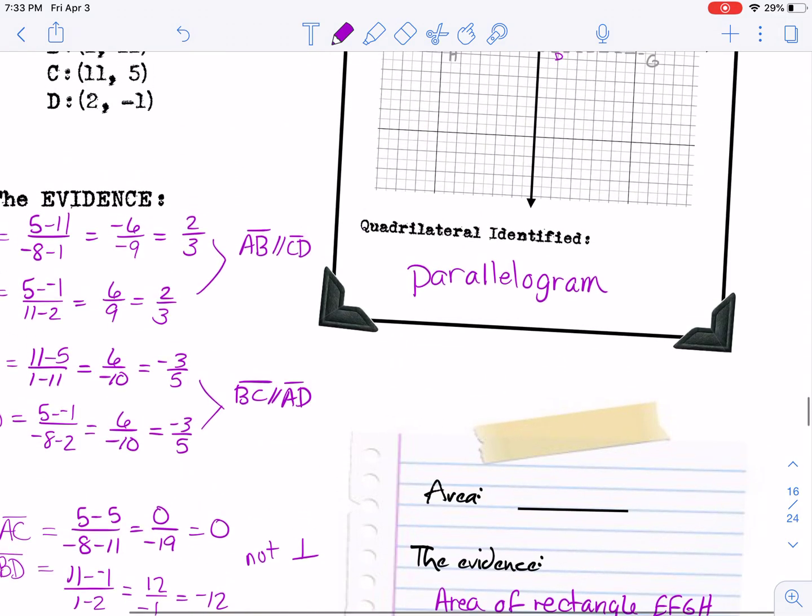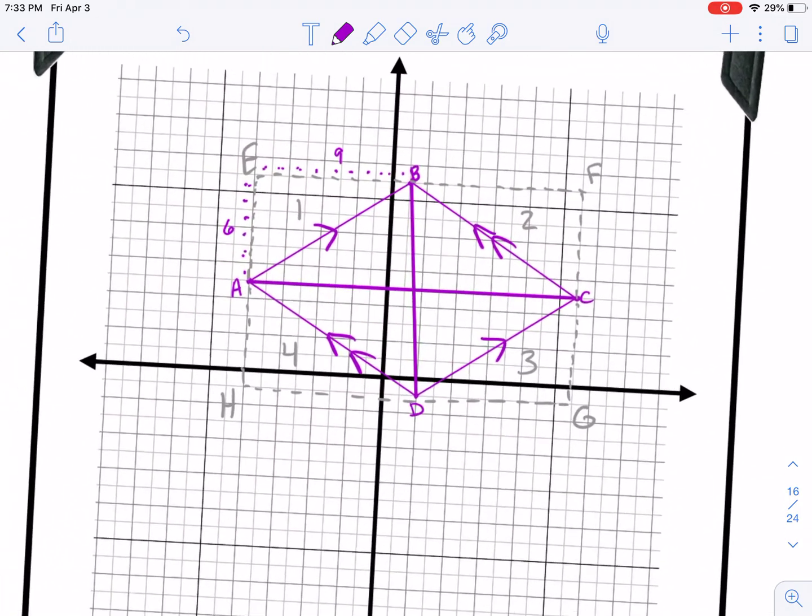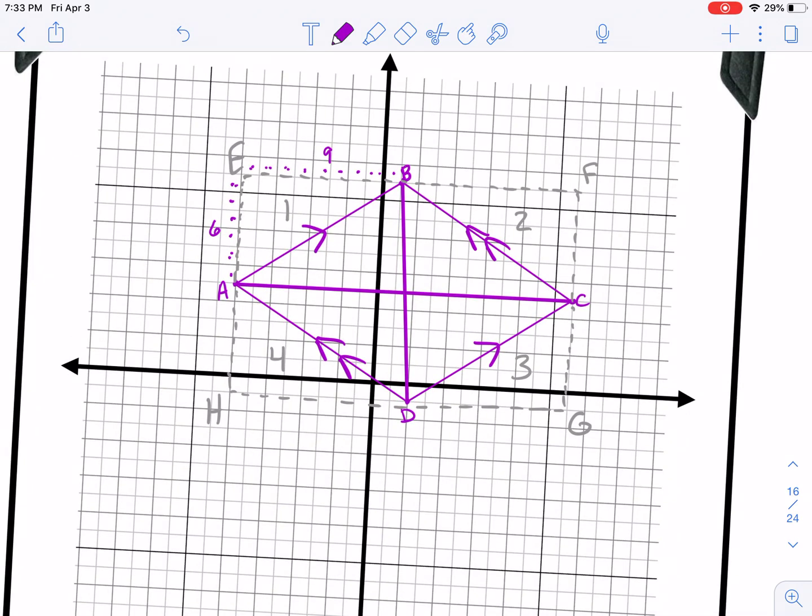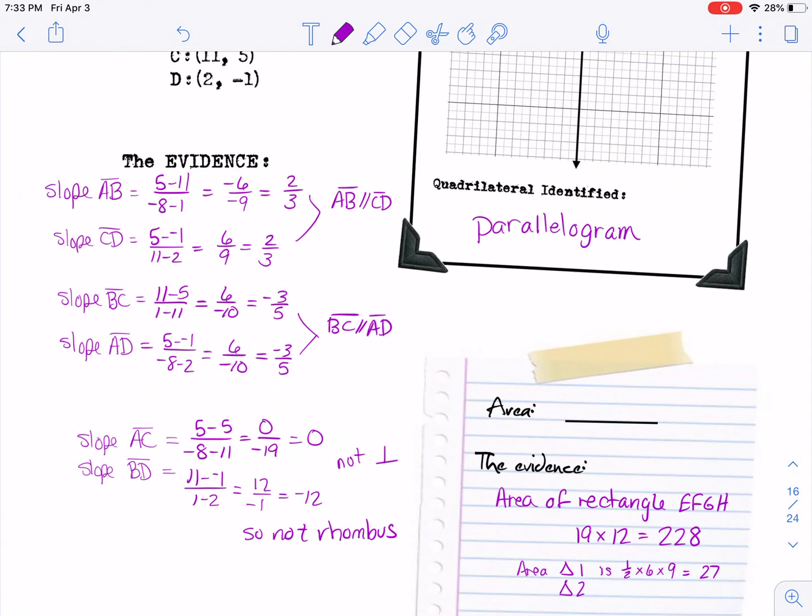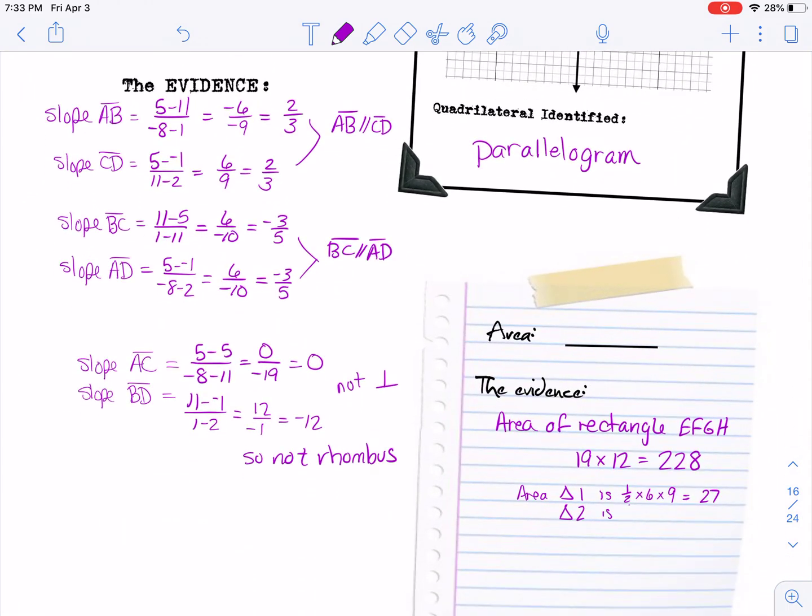Let's do area of triangle number 2. Let's see if I can count right this time: 10 by 6. So that area is 1/2 of 6 times 10, so that is 30.